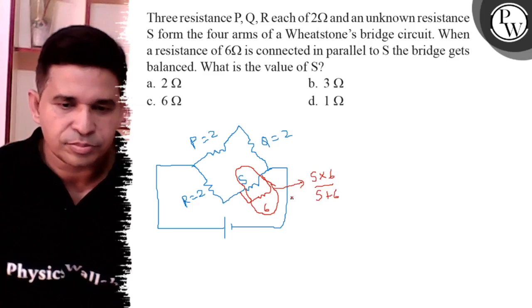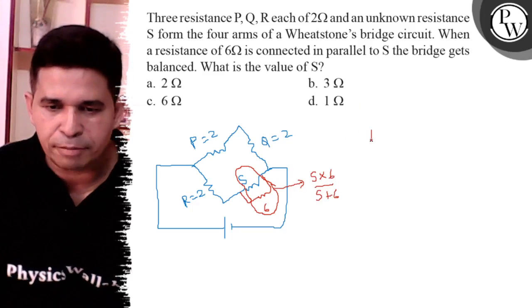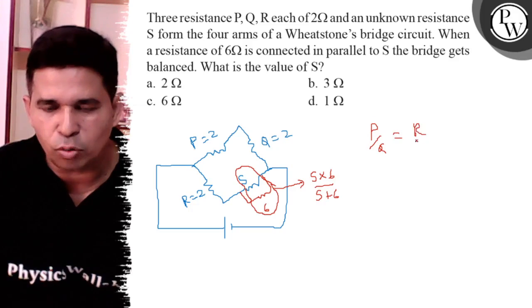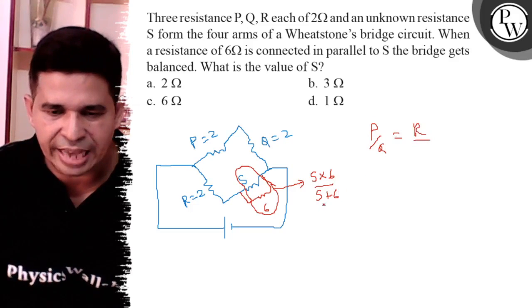So in bridge balance, P upon Q is equal to R upon S. This is the S arm.